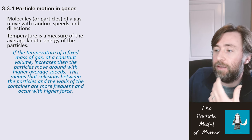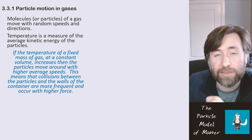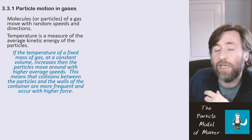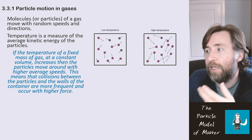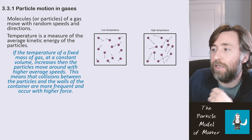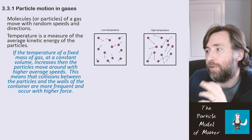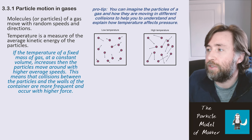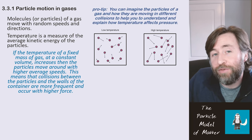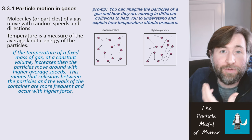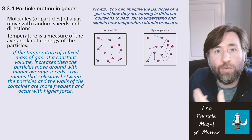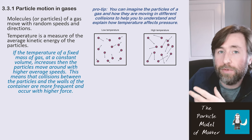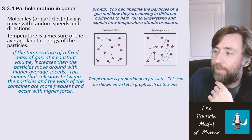This means that collisions between the particles and the walls of the container are going to be more frequent, giving a higher pressure. Also, because they have higher speeds, they're going to have a higher force, so that will also mean a higher pressure. At a low temperature: less frequent, less force collisions with the walls. At a higher temperature: more frequent collisions with more force against the walls of the container. Memorizing these particle diagrams will help you with this explanation in the exam.